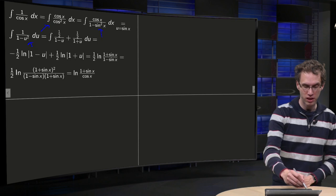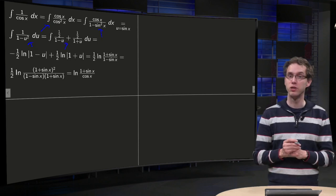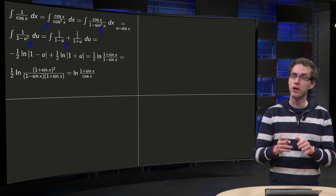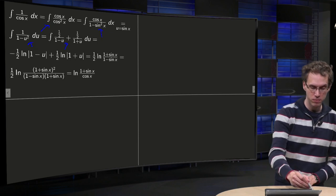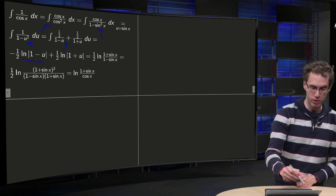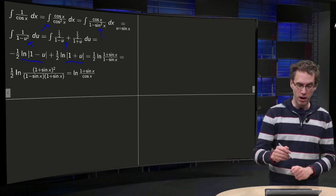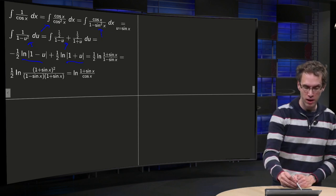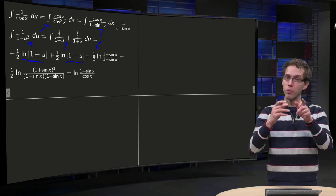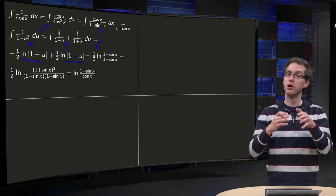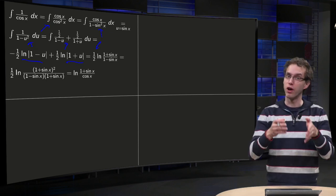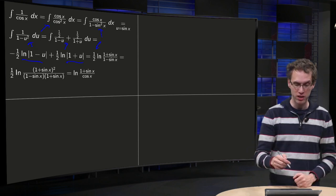You separate this fraction into 1/2 over (1 - u) plus 1/2 over (1 + u). You get two logarithms. The -ln(1 - u) + ln(1 + u). You can combine the logarithms into 1/2·ln[(1 + u)/(1 - u)]. u = sin(x). So 1/2·ln[(1 + sin(x))/(1 - sin(x))].